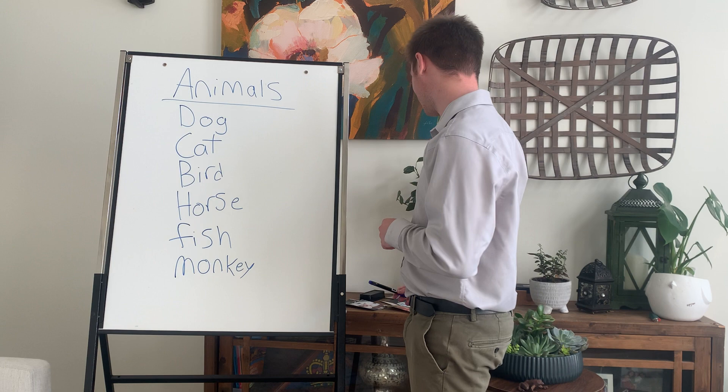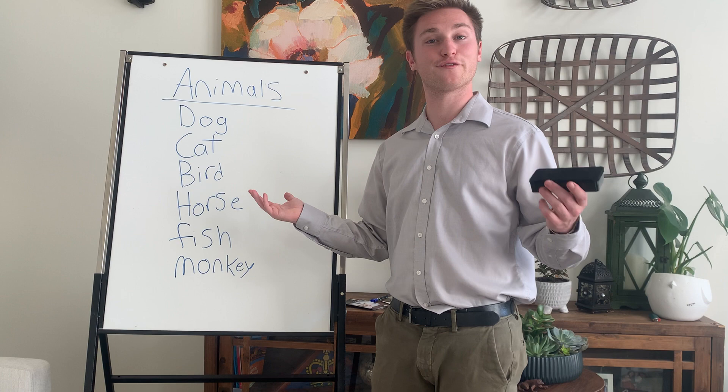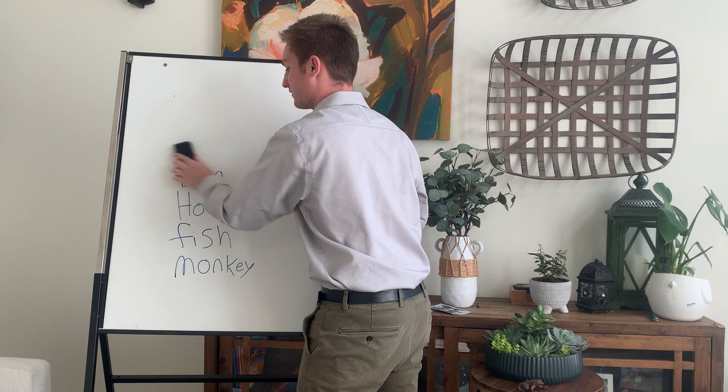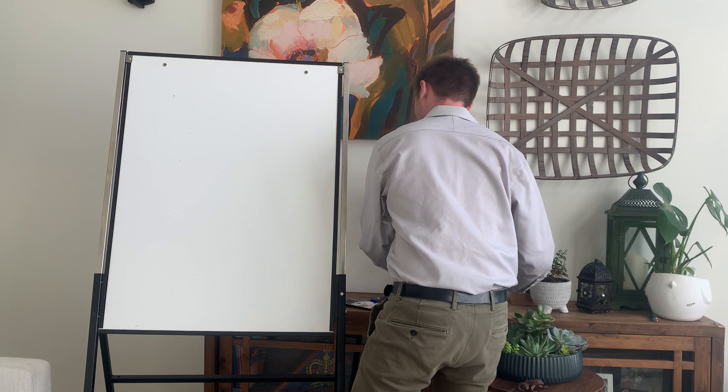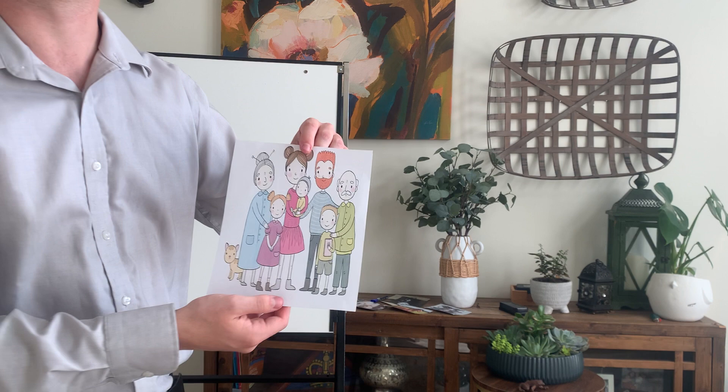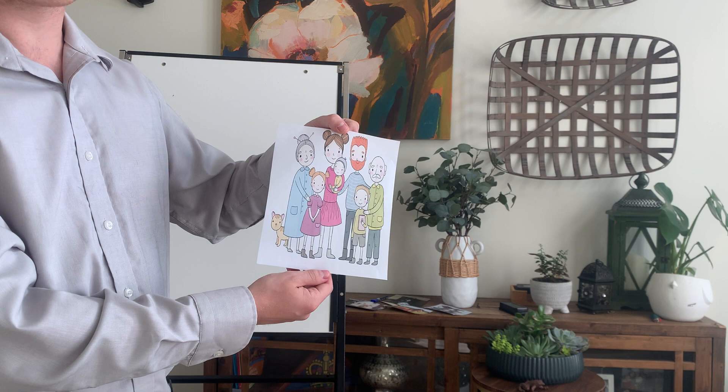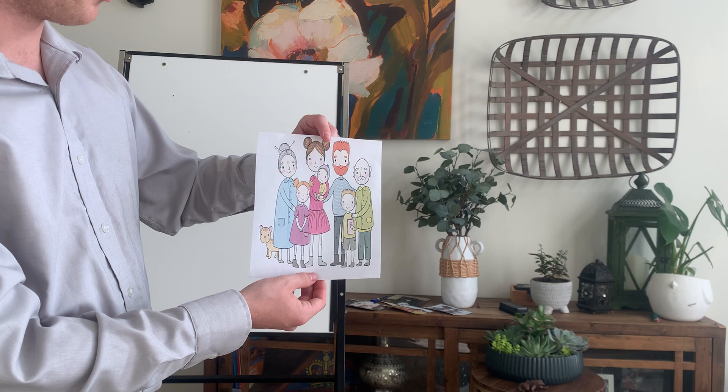The last part of our lesson will be about family. Everybody has a family — hopefully everybody loves theirs. So this is our example of a family, as we can see here. Now, to learn the names of all the different members in the family, we will go by the perspective of the baby.